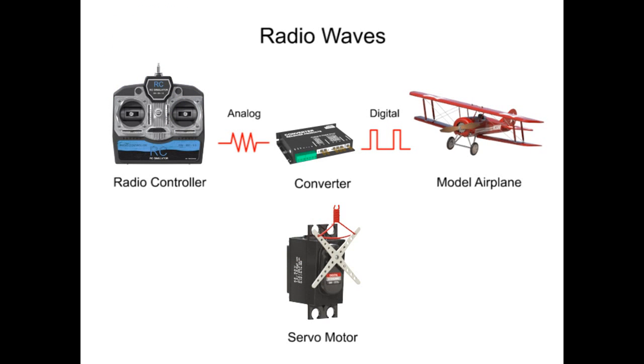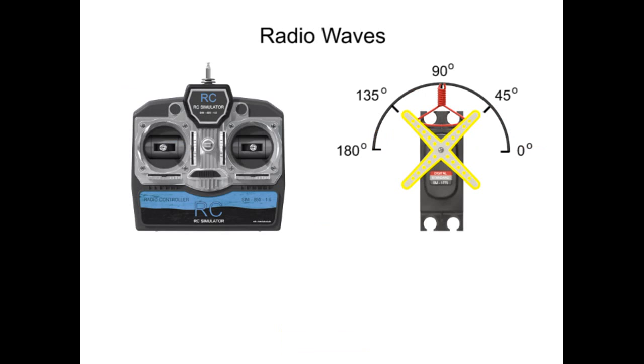Let's look at the operation of a servo motor in more detail. The horn of a servo motor can be activated to hold certain positions. This position is set by the length of a radio pulse arriving from the radio controller.